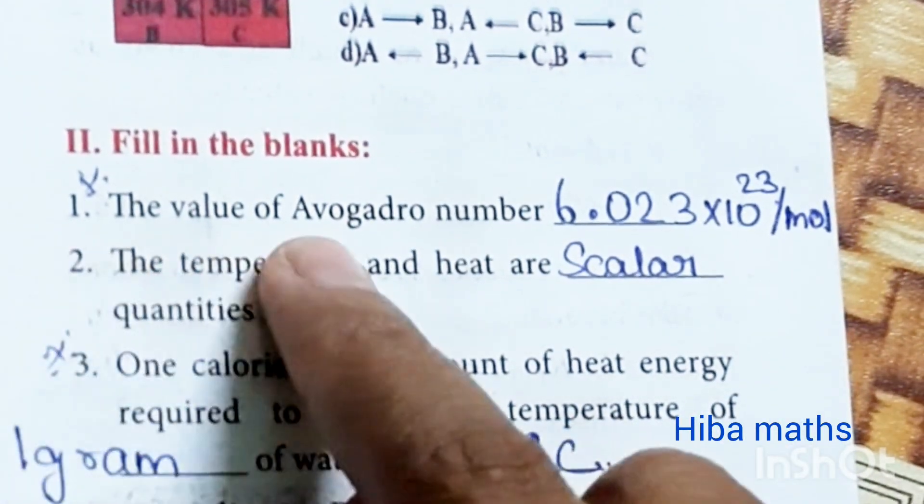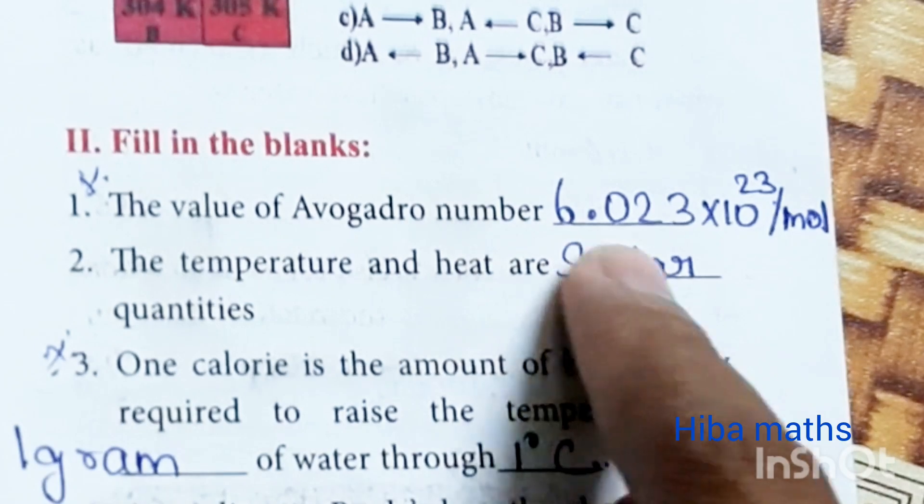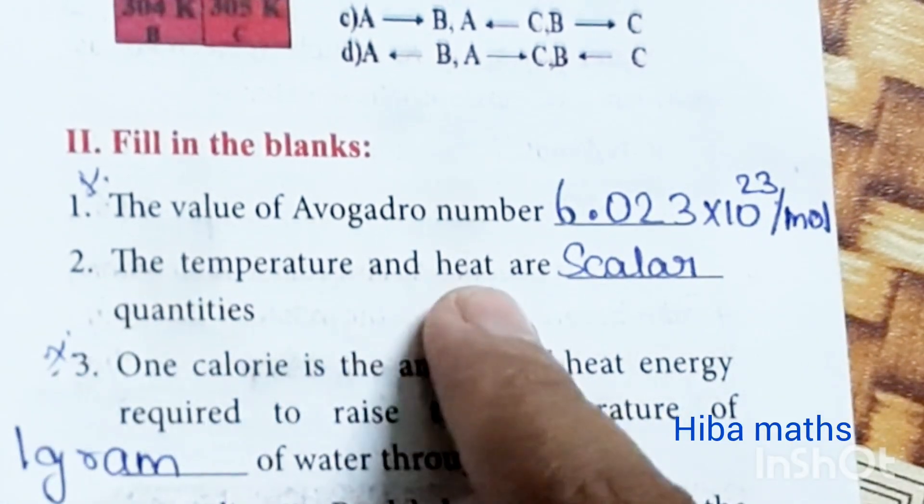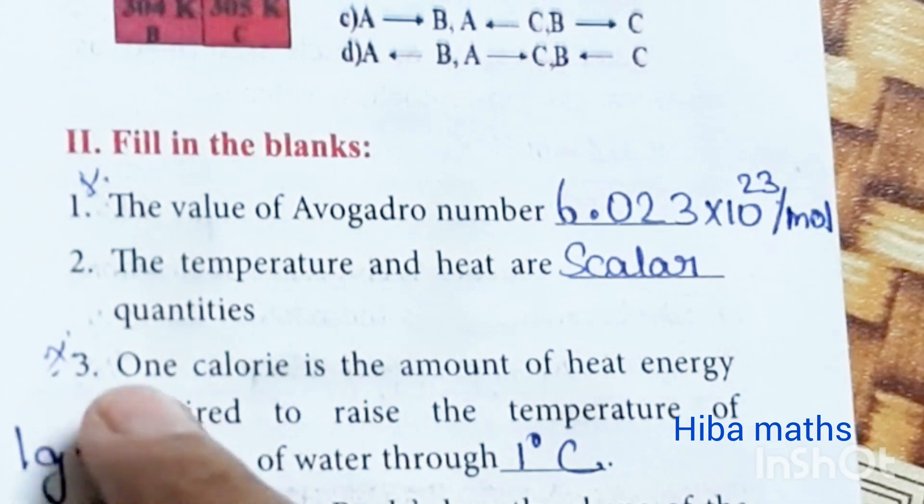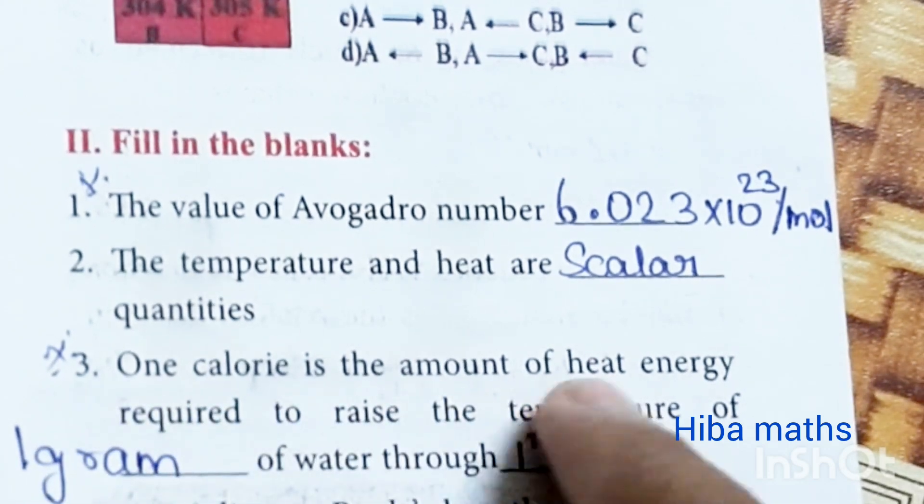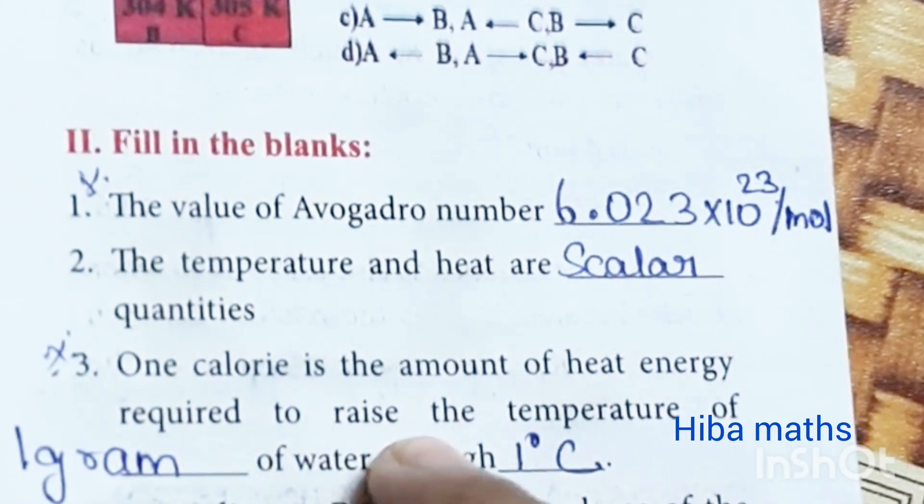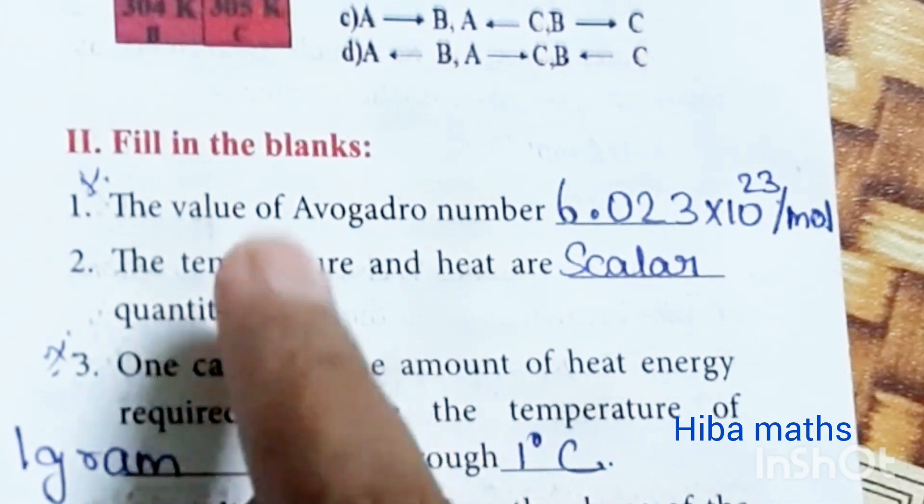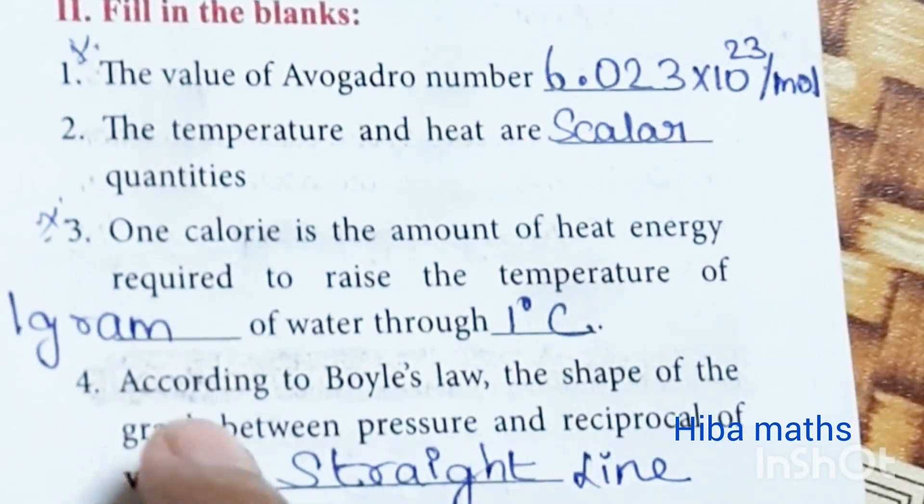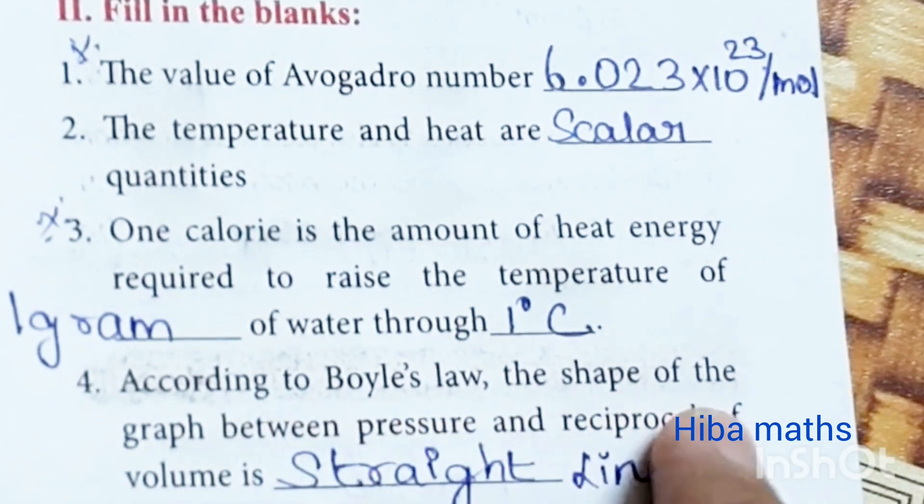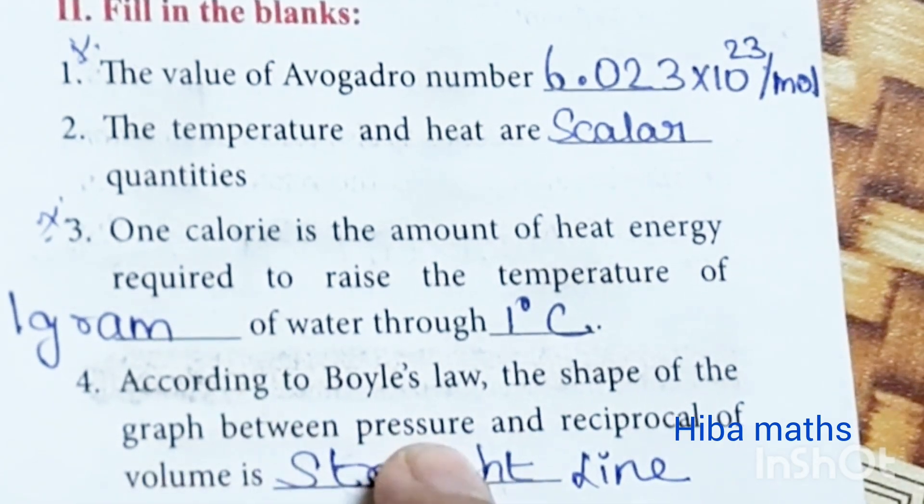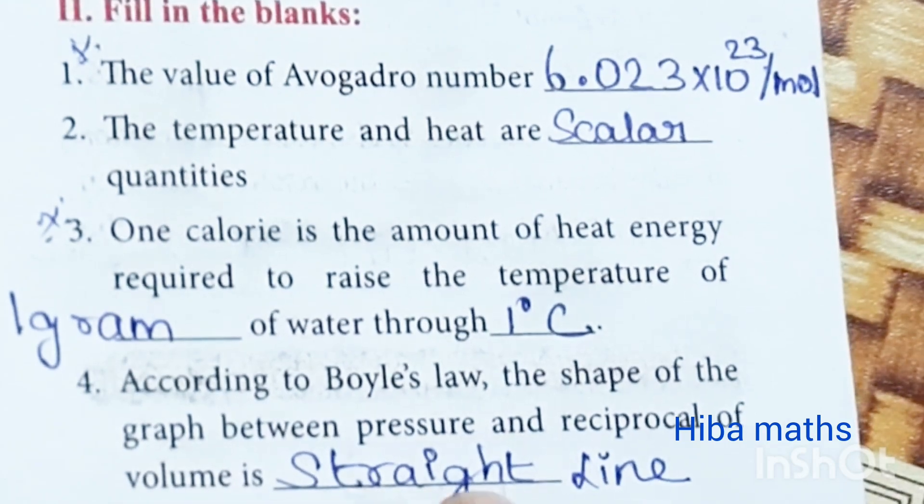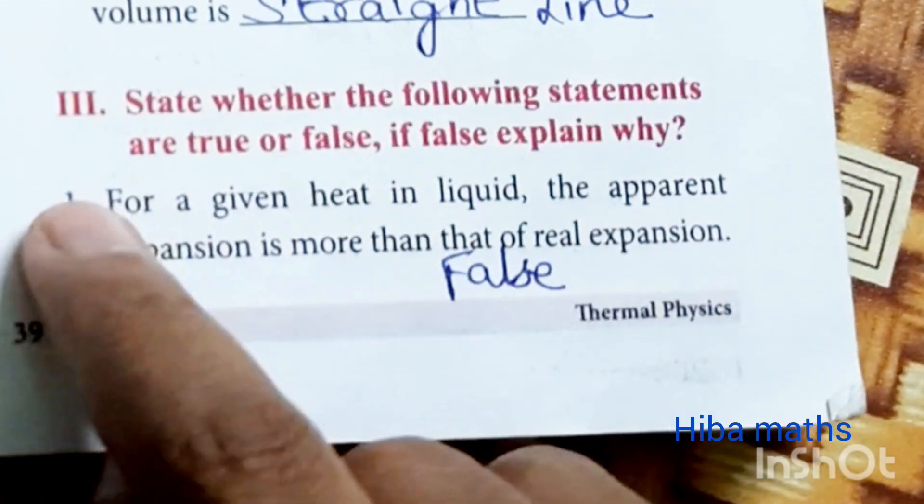The value of Avogadro number: 6.023 into 10 power 23 per mole. The temperature and heat are scalar quantities. One calorie is the amount of heat energy required to raise the temperature of one gram of water through one degree Celsius. According to Boyle's law, the shape of the graph between pressure and reciprocal of volume is a straight line.